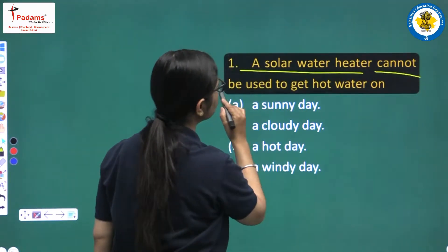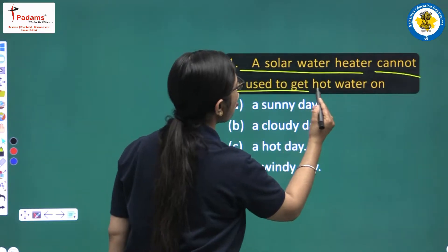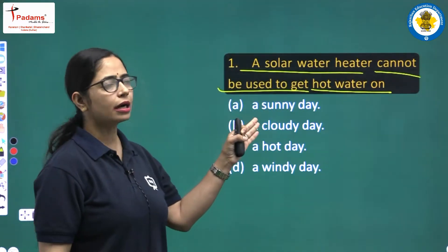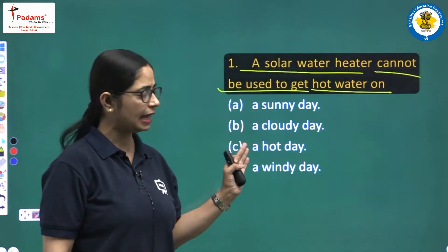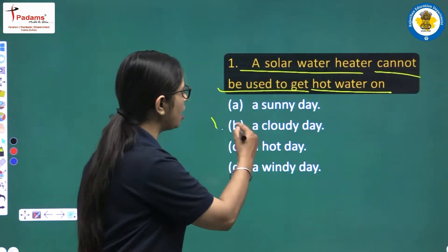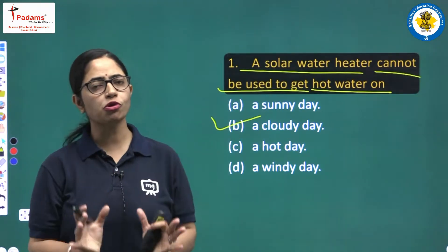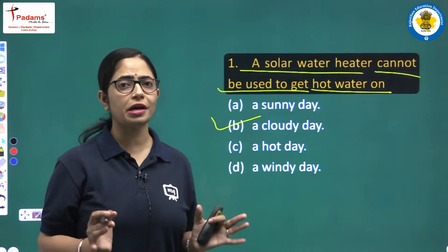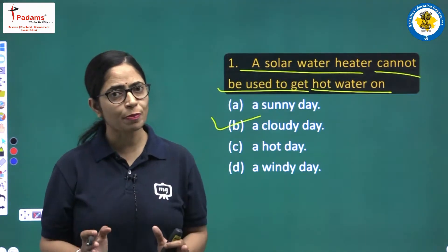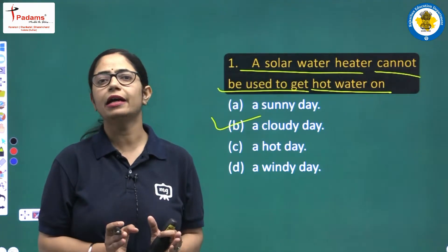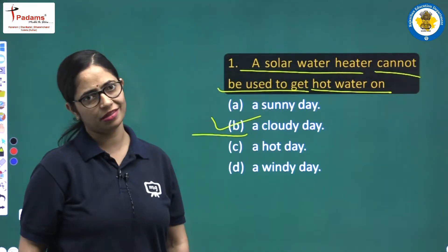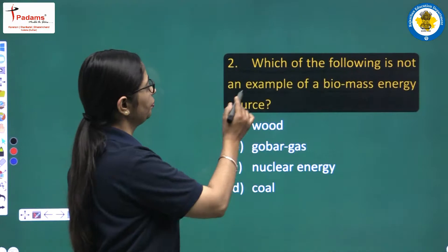Question number 1: A solar water heater cannot be used to get hot water on which day? Option A: a sunny day, Option B: a cloudy day, Option C: a hot day, Option D: a windy day. The answer is Option B, a cloudy day, because when there are clouds, solar radiation does not reach the water heater.